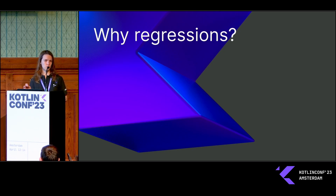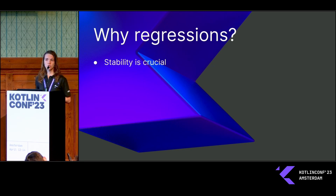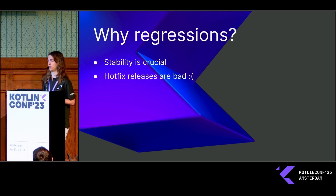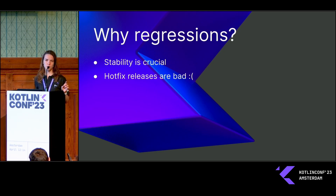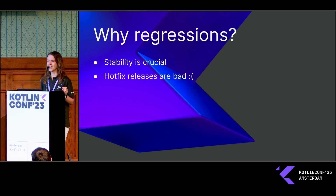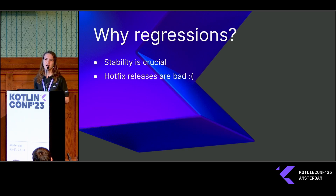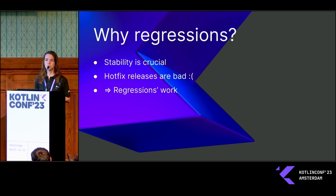We wanted to be as stable as possible. So why regressions? Stability is crucial, and we can see that every single Kotlin release has had a hotfix — this is the story for all Kotlin releases except 1.3.50, which for some reason didn't have a hotfix release. This is a bad sign of instability, and the main reason for hotfix releases is usually regressions.